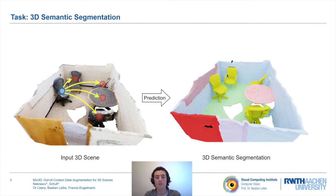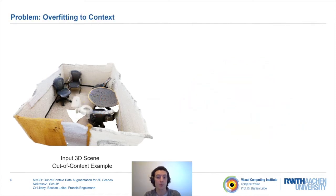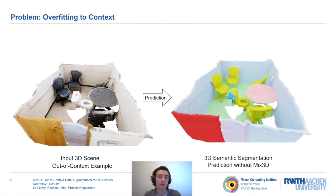This context might help to predict the semantic class of individual objects. However, conventionally trained models are prone to overfit to context. For example, models have difficulties predicting objects in unusual environments and do not generalize well to out-of-context examples. We argue that object semantics can be invariant to context. For example, a toilet remains a toilet even in the middle of a conference room.